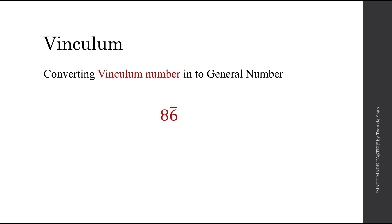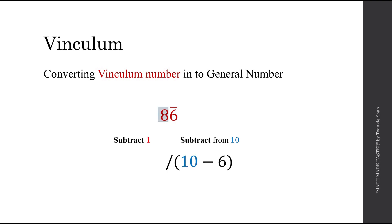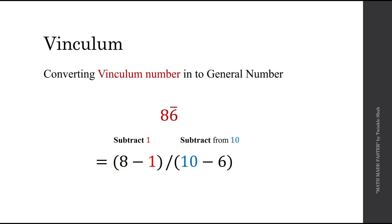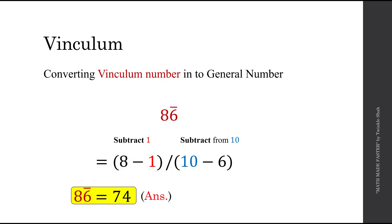Let's do another example: 8 6̄. We can apply the same technique — we subtract 6 from 10 and subtract 1 from 8. So we have 8 minus 1. Simplifying: 10 minus 6 equals 4, and 8 minus 1 equals 7. Therefore 8 6̄ equals 74.